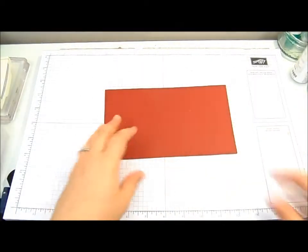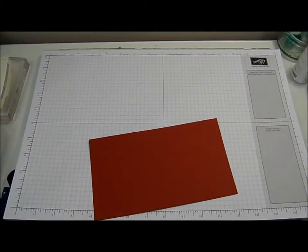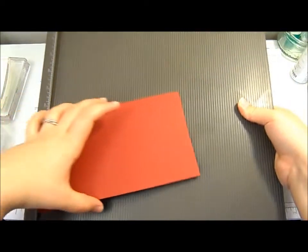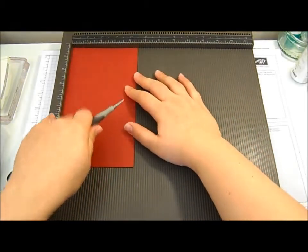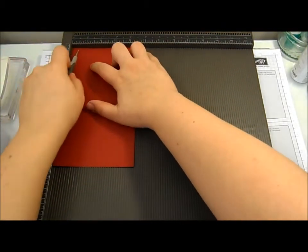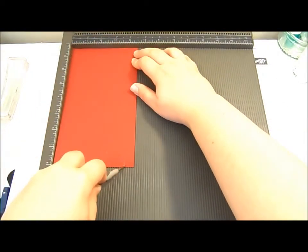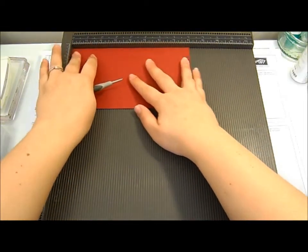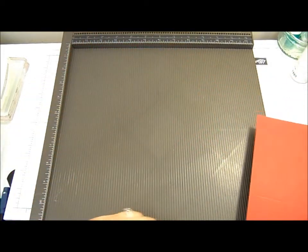First of all, let's make the little pocket. You might have noticed I've got a new camera setup today and I keep knocking the camera, so if it wobbles a bit, I'm sorry. We need our scoring tool. We're going to score on the short side first at half an inch and at four inches, then turn it around and score the long side at four and a half. How super simple.